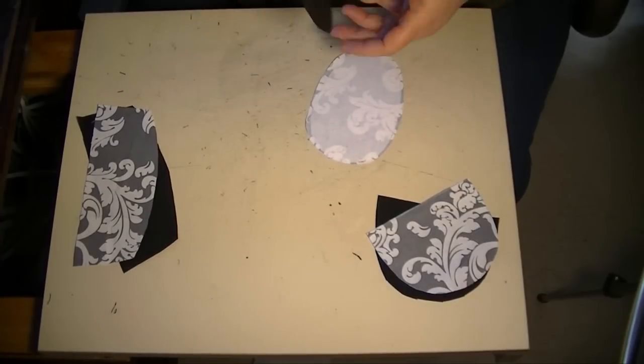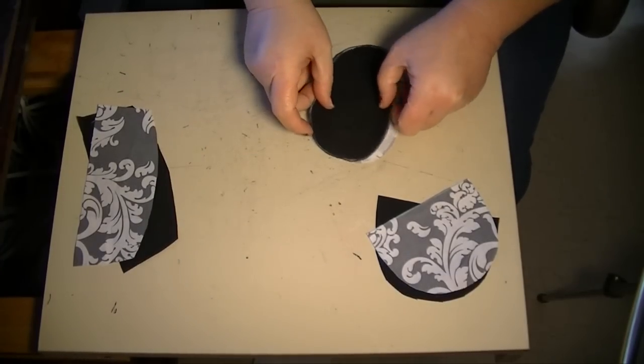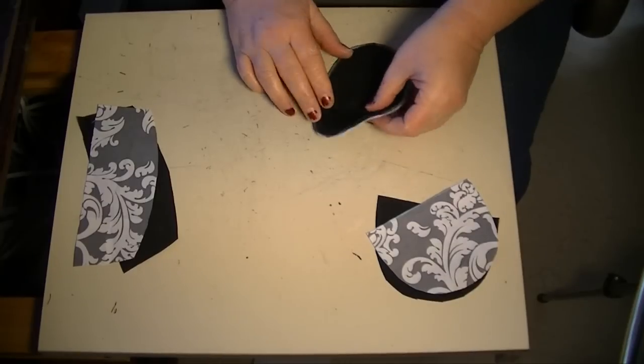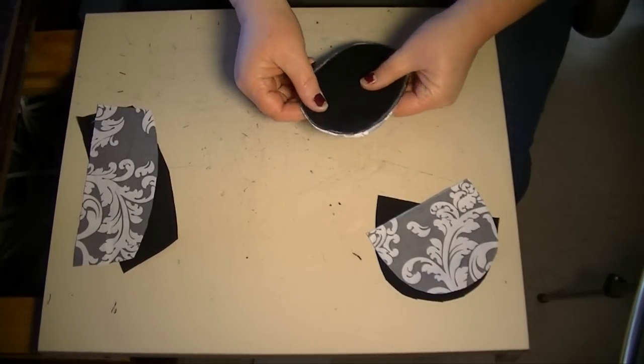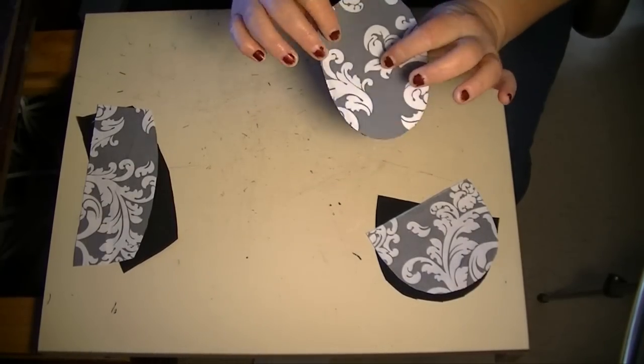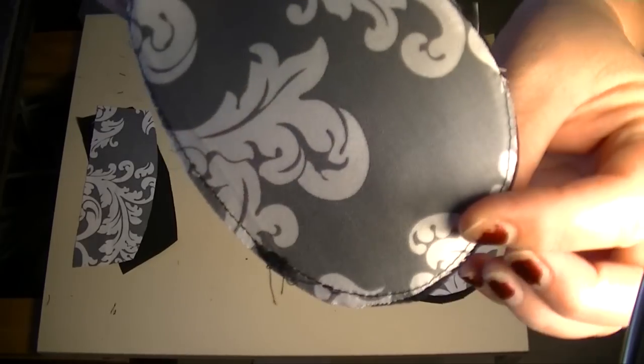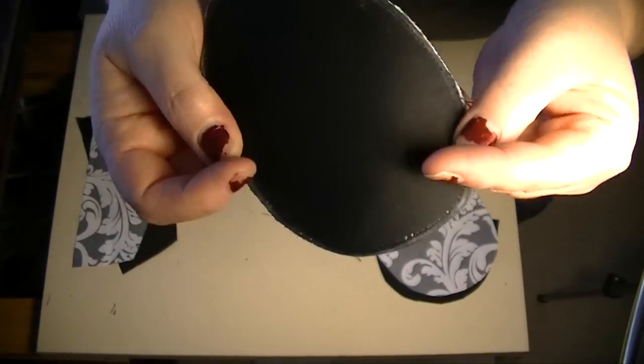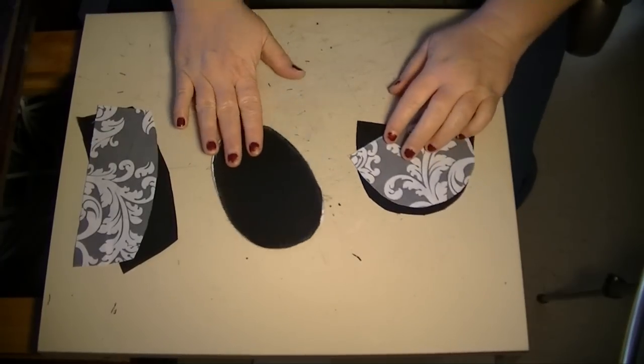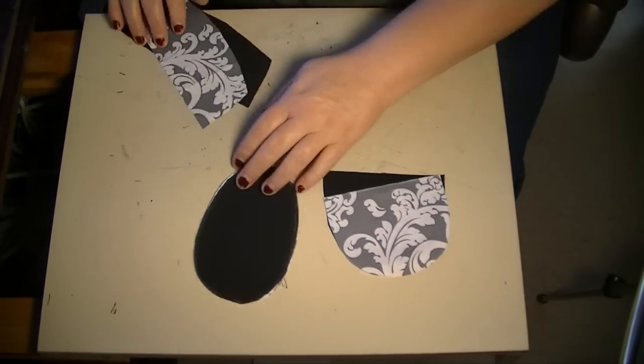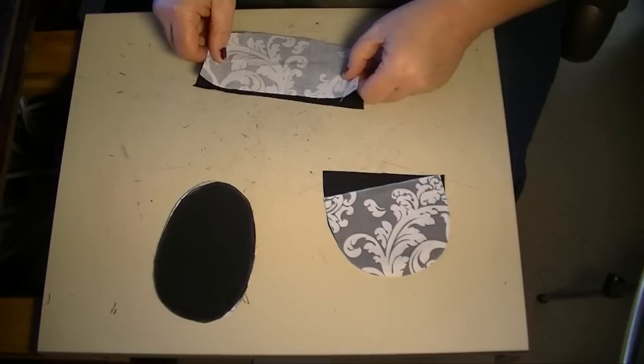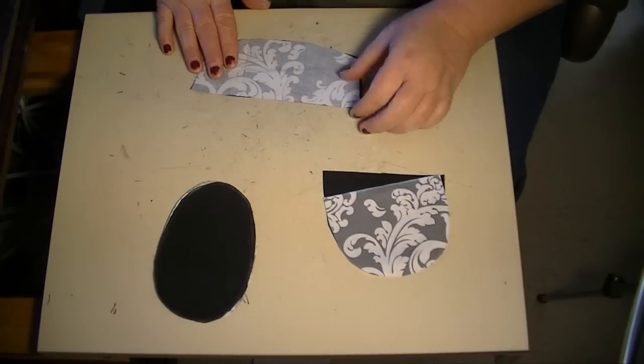So the next thing that I want to do is, I'm not going to do any turning on this sole, so I'm going to just tack these onto each other with wrong sides facing. I just tacked all the way around it, just to keep it in place.